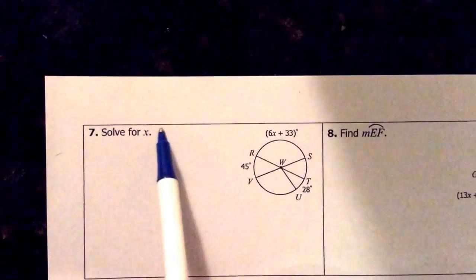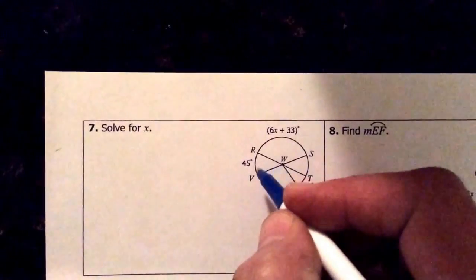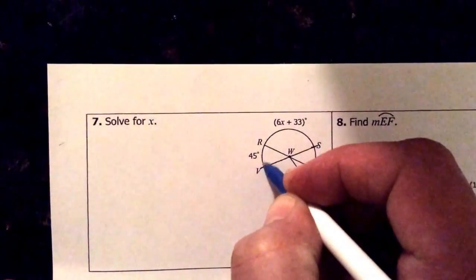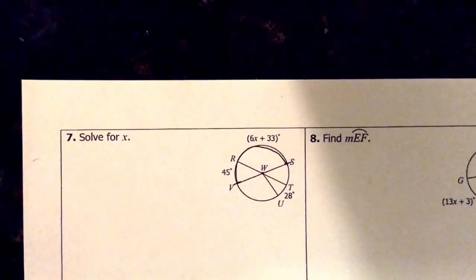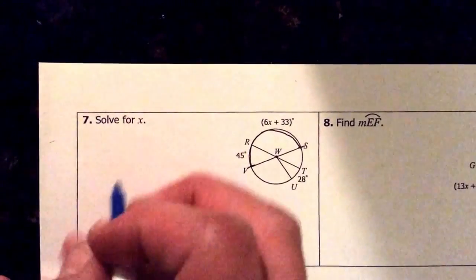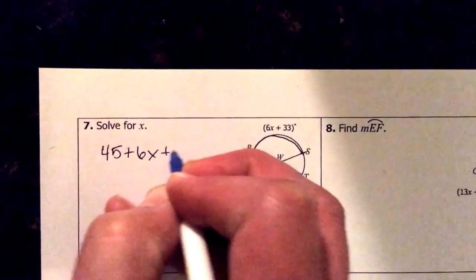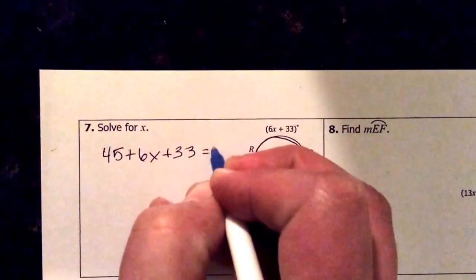It's asking us to solve for x. What I notice here is that from v all the way around to s we have a semicircle. Now a semicircle is 180 degrees. So if I say 45 plus 6x plus 33 equals 180.